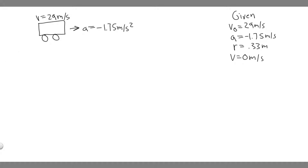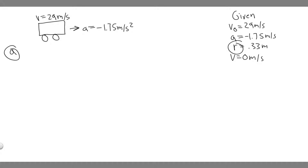The first thing for every problem is just write down the given. We're given the initial velocity: 29 meters per second. We're given the acceleration: they're slowing down at 1.75, so it's negative. We're given the radius: 0.33 meters. And we're also given the final velocity because it's going to stop — it's 0 meters per second.